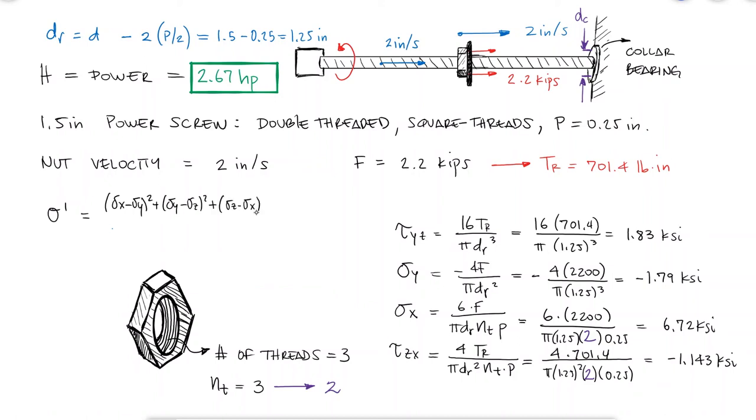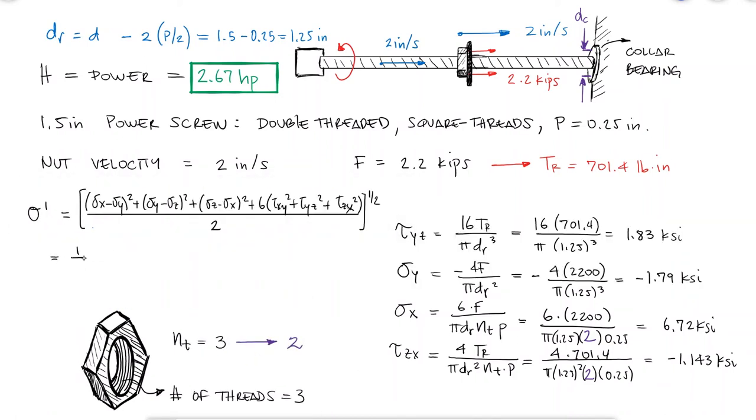Substituting these values in the von Mises equation that we used for example 1 and in the main video, we find that the critical stress is 7.13 KSI.